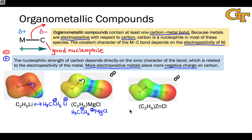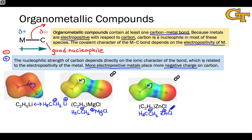Moving further to the right into the transition series, we get even less electron-rich carbons. Here we have an organozinc with the zinc atom at the center, flanked by a chlorine on the right and an ethyl fragment on the left. The carbon is still somewhat nucleophilic — evidenced by the blue color around the zinc atom, so the zinc is partially positive and the carbon partially negative. We can definitely draw a resonance structure with negative charge on that carbon atom, but the bond is definitely not as polarized as in the organomagnesium or organolithium. This has advantages, as we'll see shortly.